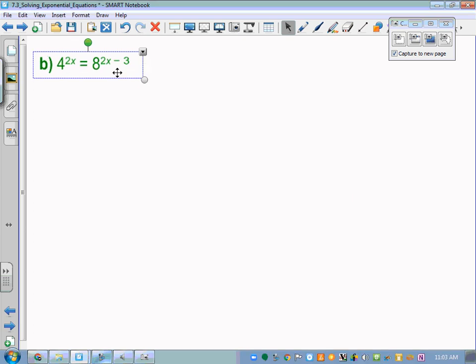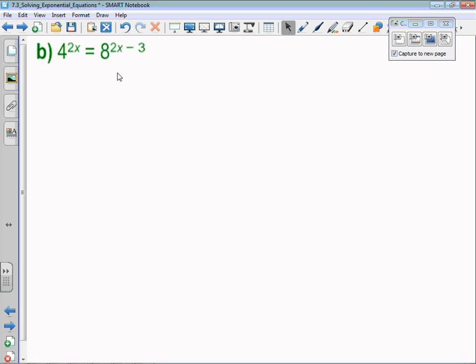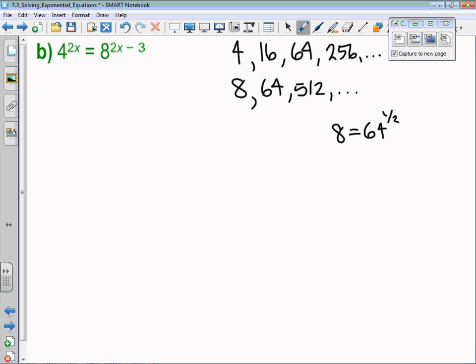Example B is tougher because you cannot write 8 as base 4. 4 to the power of 1 is 4, then 4 squared is 16, then 4 cubed is 64, then 4 to the power of 4 is 256. That pattern continues. I could look at 8 as well: 8, then 8 times 8 would be 64, 64 times 8 would be 512. Neither of those lists have common numbers. I suppose 64 is in common, but the challenge is I would have to write 8 equals 64 to the power of 1 half and 4 equals 64 to the power of 1 third. You can use that, but it's very difficult.